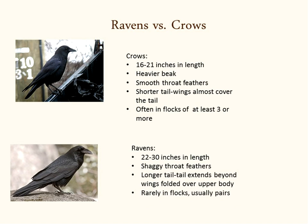Let's look at ravens versus crows, because you will sometimes see them together in the same places. The size is quite different: the largest crow is smaller than the smallest raven — crows are 16 to 21 inches, ravens are 22 to 30 inches. From a distance it may be a little difficult to distinguish sizes, so when in doubt, don't count. Crows have a less heavy beak than ravens — the raven has a longer beak that is slightly heavier than the crow's.